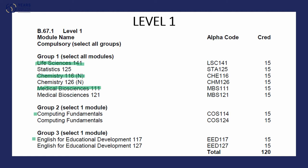For second semester, the student will then do Statistics 125, Chemistry 126, and then the departmental module MBS 121. If they selected the computer module in the first semester, they will then have to do the English module in the second semester. However, if they started with EED 117 in the first semester, they will register for Computing Fundamentals Course 124, which is a second semester module. Both Course 114 and 124 are of the same content — they are just offered in two different semesters to accommodate this arrangement.